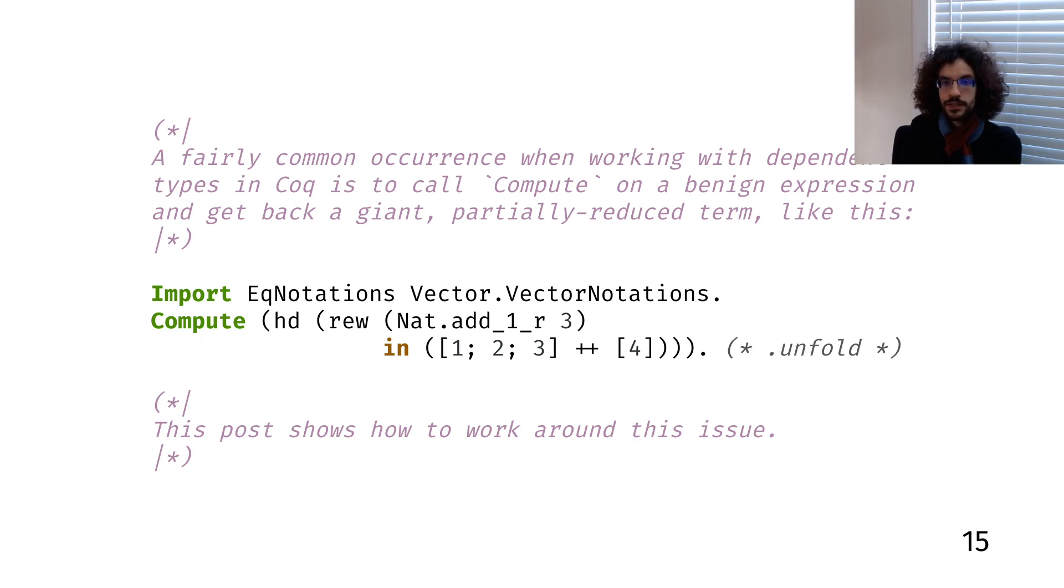When you give Alectryon a Coq file, you can compile it to a webpage, but you can also generate a reStructuredText file by partitioning the Coq source into a sequence of code and comment blocks, extracting the comments, and wrapping each code fragment into a reStructuredText code block.